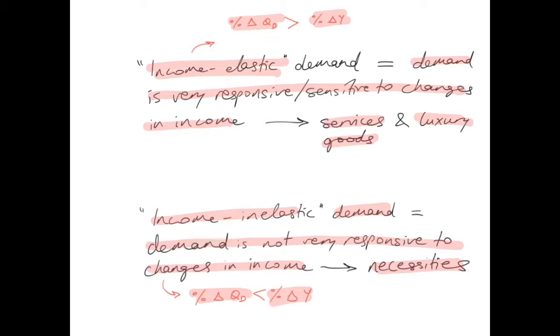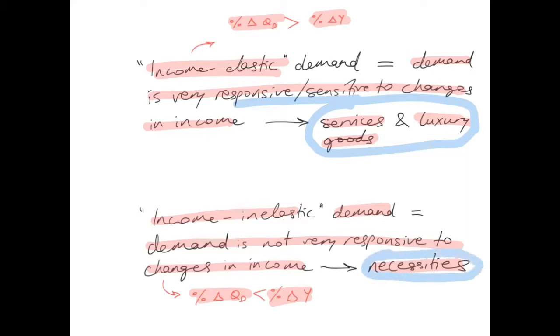So services and luxury goods tend to have income elastic demand, where demand is very responsive to changes in income. Necessities tend to have income inelastic demand.